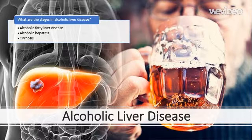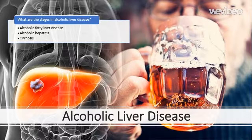Cirrhosis is the final stage of alcoholic liver disease. It occurs when prolonged inflammation of the liver has caused scarring and subsequent loss of function. Loss of liver function can result in death. The damage caused by cirrhosis is not reversible. In mild to moderate cases, stopping drinking immediately should prevent further damage. In more severe cases, a liver transplant may be required.